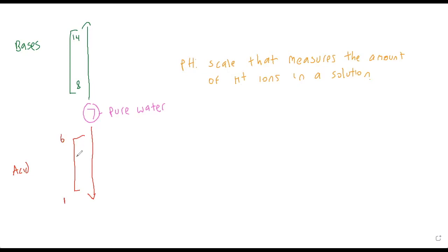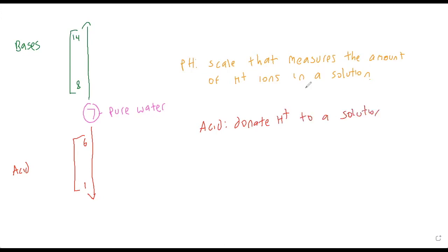Acids go from six down to one. The more acidic something is, the better it is at breaking down bonds, especially covalent bonds. That's why in your stomach you have hydrochloric acid at a pH of about two — it breaks down proteins which normally are really hard to break down. So once again: an acid donates hydrogens to a solution, and a base accepts hydrogens from a solution.